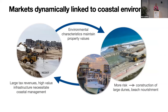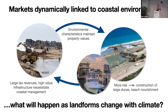Why are housing prices increasing? It's because markets are dynamically linked to the coastal environment. Looking at this feedback loop: large tax revenues and high-value infrastructure necessitate that we manage the coast — removing overwash from roadways, nourishing beaches, and building larger dunes. These environmental characteristics help maintain property values. With more properties at risk, we construct larger dunes and continue to nourish. The cycle goes on perpetually. My colleagues and I are interested in what will happen to this feedback loop when landforms change with climate impacts, sea level rise, and storms.